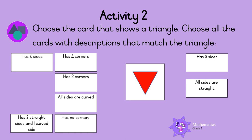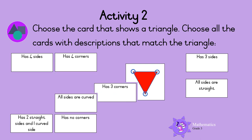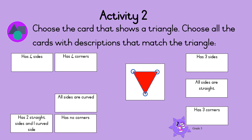Now let's count the corners. How many corners does the triangle have? 1, 2, 3. So a triangle has 3 corners. Triangles have 3 sides, all the sides are straight, and they have 3 corners. Excellent!